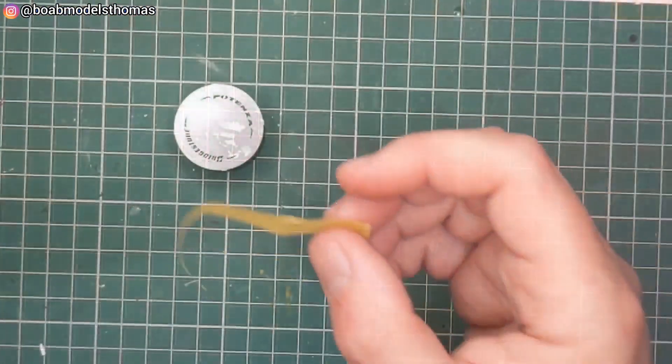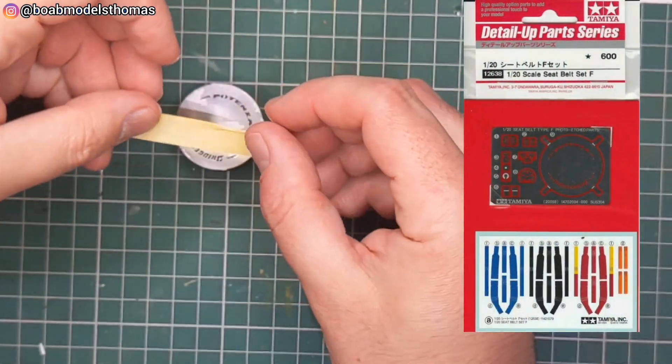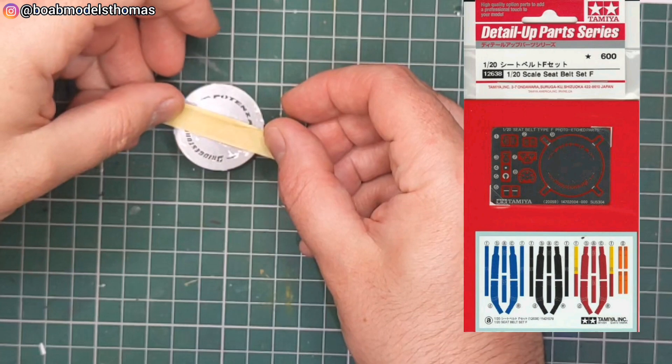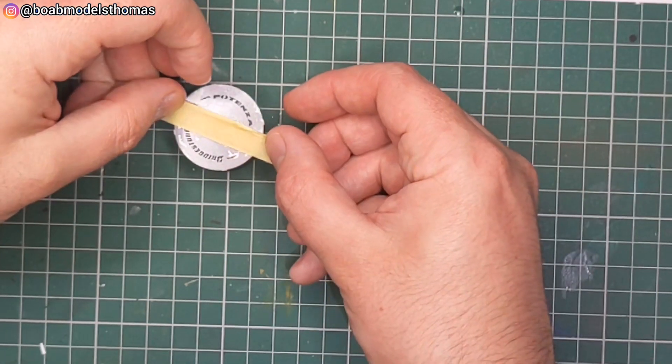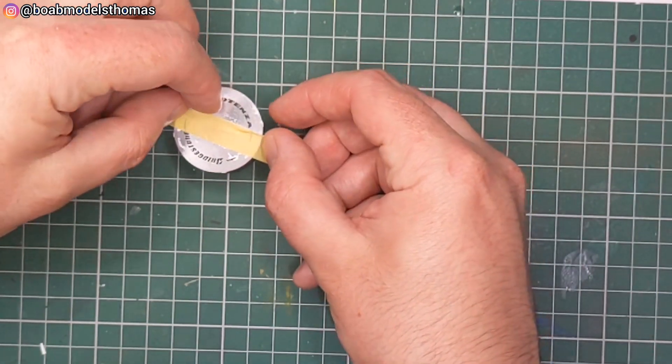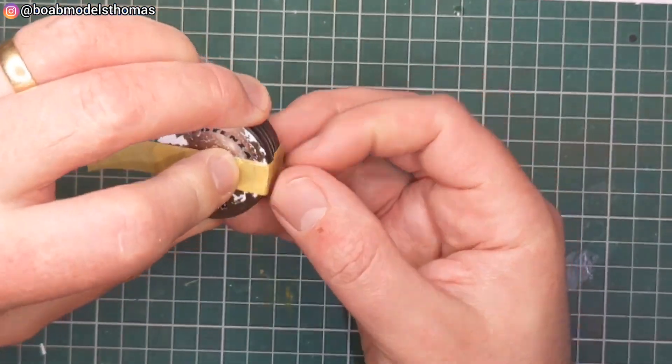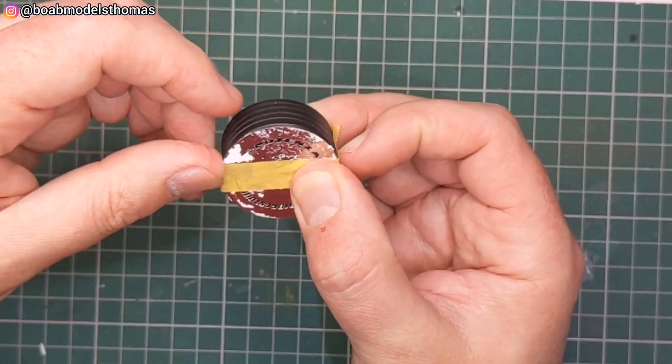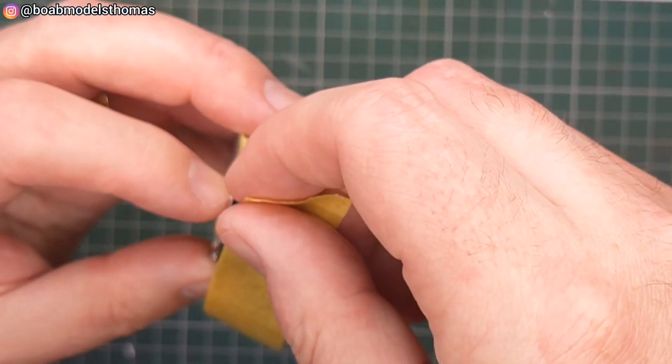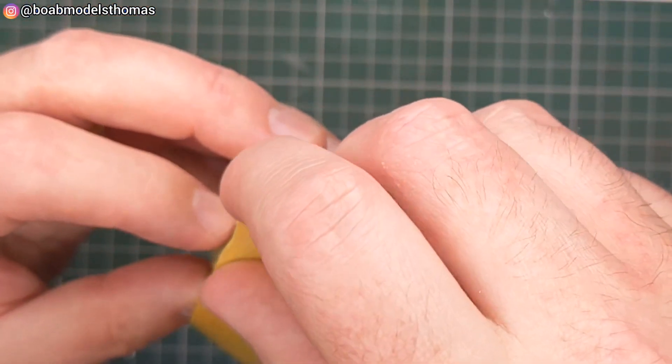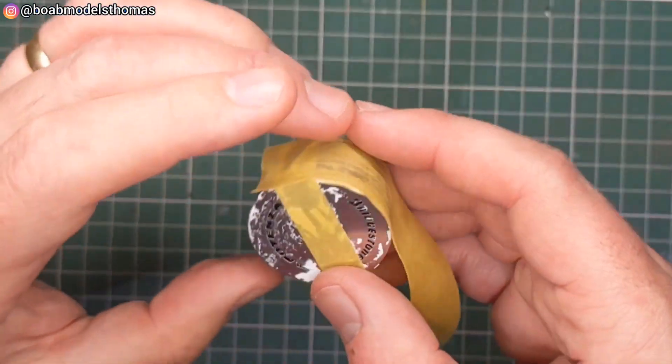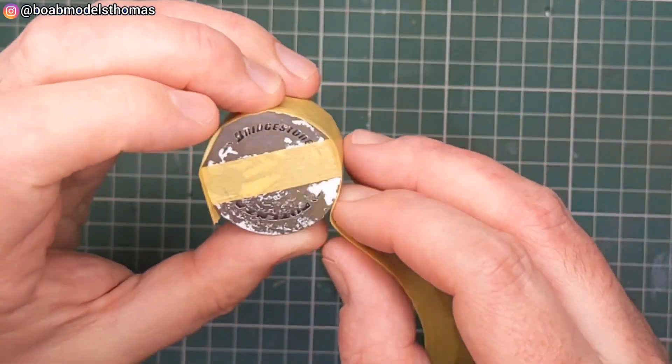I then used this Bridgestone Potenza stencil which came with some Tamiya seatbelt set. Covered those over. It's important to attach the stencil first as if you try to do it over the top of the tape, I find the stencil bends. And then I used some 2cm tape around the outside which covered up the rest very nicely.